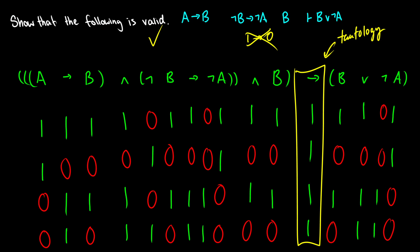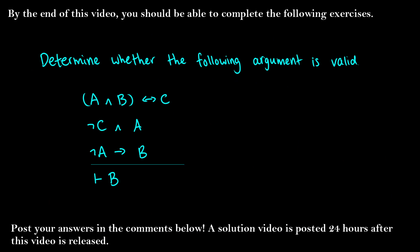That's how you prove validity using a truth table. We'll learn how to do it syntactically in a few videos when we start rules of inference and proofs. For now, try this question yourself — the solution video is posted within 24 hours, and if you have any questions leave them in the comments below.